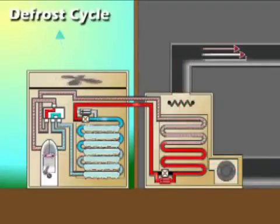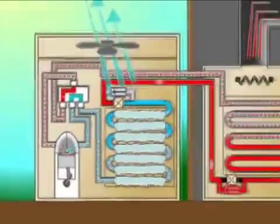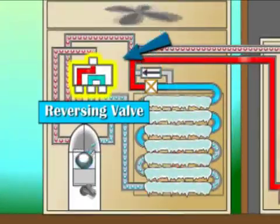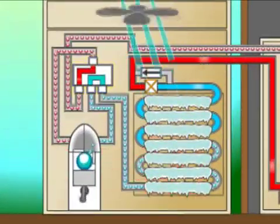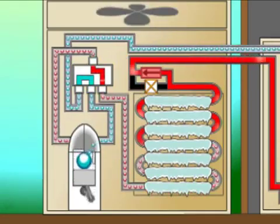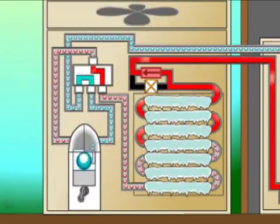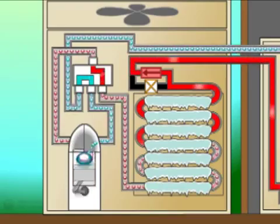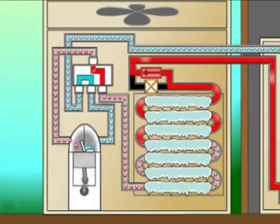As the defrost cycle is initiated, the reversing valve switches the refrigerant path back to that of the summer mode. This allows indoor heat to be transferred from the inside air stream to the outside coil, thereby melting the accumulated frost.